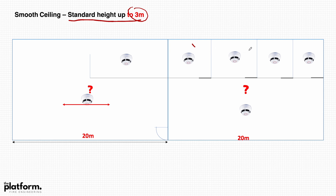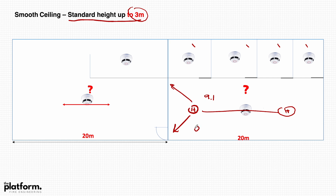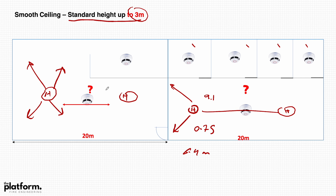In a room with a smooth ceiling at standard height, the distance between heat detectors shall be 9.1 meters, so you may need two heat detectors in one room to achieve proper coverage. Additionally, the distance from any heat detector to any corner or any point on the ceiling shall not exceed 0.7 times the listed distance — that is, 9.1 multiplied by 0.7 equals approximately 6.4 meters, or 6.3 meters as per the UAE Fire Life Safety Code.